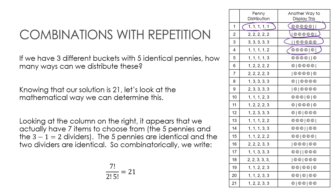So essentially what I'm doing is permutating seven objects, because even though there are three buckets and five pennies, I have five pennies and two dividers. I don't need three dividers — if I'm dividing into three different things, I only need two dividers. So this would give me the idea that bucket one has four, bucket two doesn't have any, and bucket three has one.